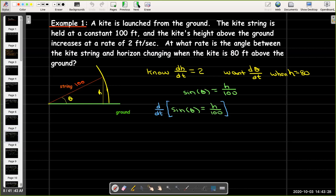Next, I want to differentiate implicitly with respect to t. And that gives me cosine of theta times dθ/dt equals 1 over 100 dh/dt. And I can solve that for dθ/dt. I'll get 1 over 100 times cosine theta times dh/dt.